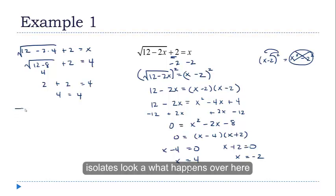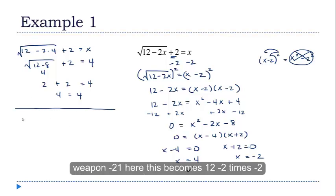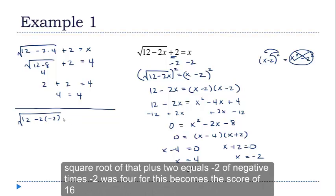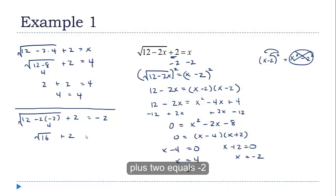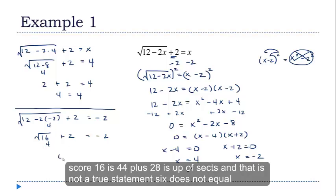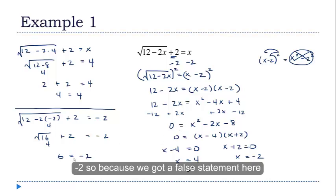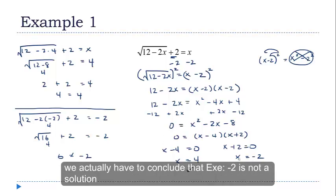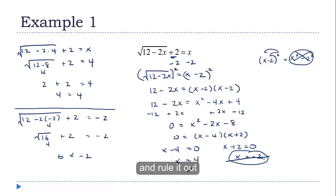Now let's look at what happens with negative 2. When I put negative 2 in, this becomes the square root of 12 minus 2 times negative 2, plus 2 equals negative 2. Negative 2 times negative 2 is 4, so this becomes the square root of 16 plus 2 equals negative 2. The square root of 16 is 4, and 4 plus 2 is 6. That is not a true statement — 6 does not equal negative 2. So x equals negative 2 is not a solution; we have to rule it out.